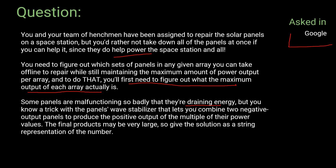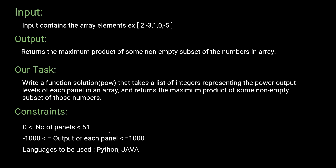Some panels are malfunctioning and draining energy from the system. However, since we know a trick — using a panel wave stabilizer — we can combine two negative output panels to produce positive output equal to the multiple of their power values. The final product may be very large, so we can give the solution in string representation. The input will contain only an array; elements like 2, -3, 1, 0, 5 represent the power output from each solar panel.